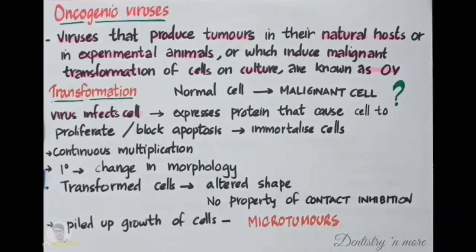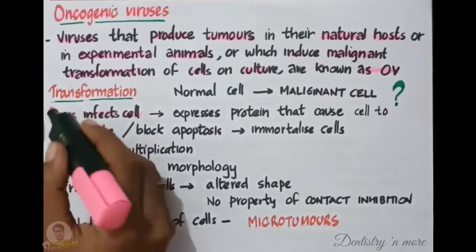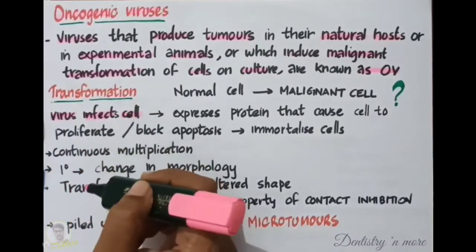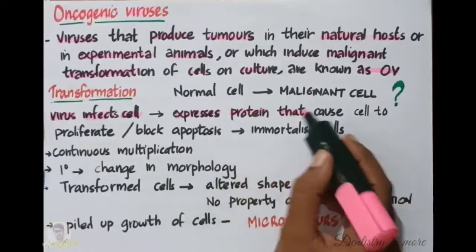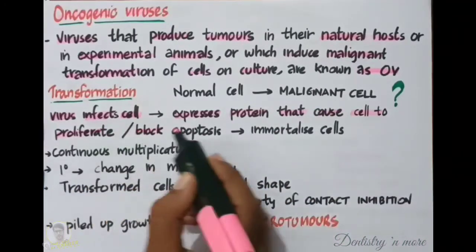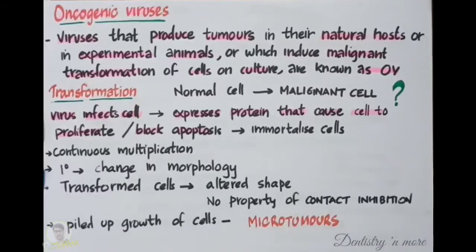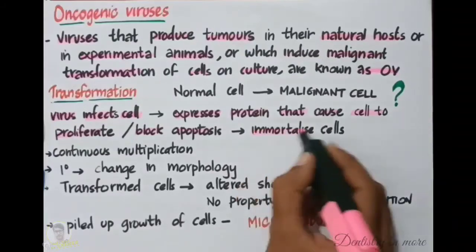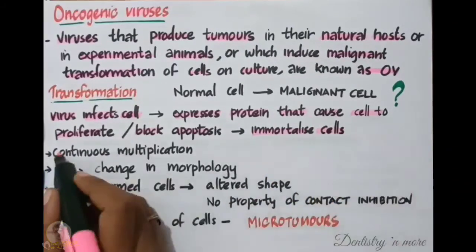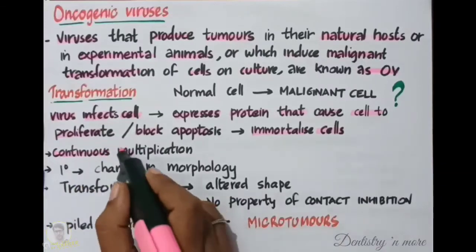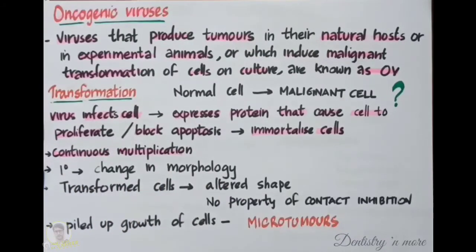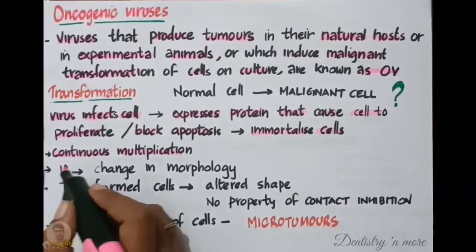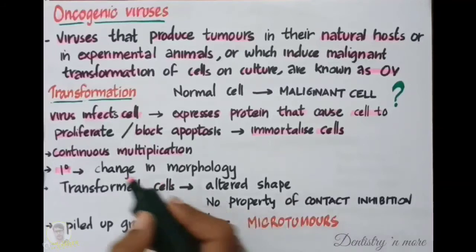The virus will first infect the normal cell, and as a result, it expresses proteins that cause the cell to proliferate or block apoptosis. As apoptosis is blocked, normal cell death is inhibited, causing the cell to become immortal — no cell death occurs — and continuous multiplication of the cell takes place.